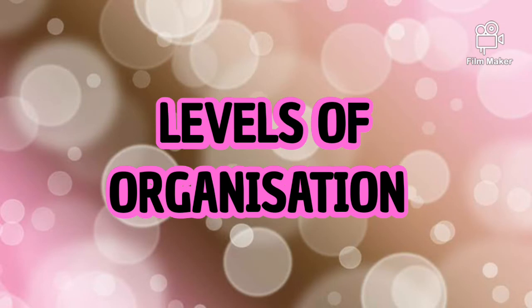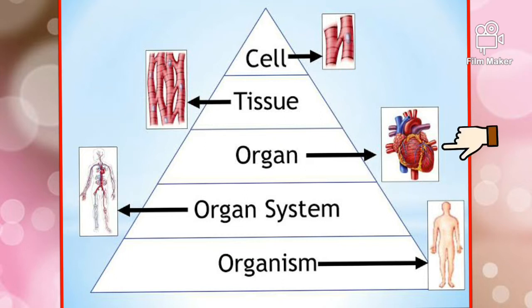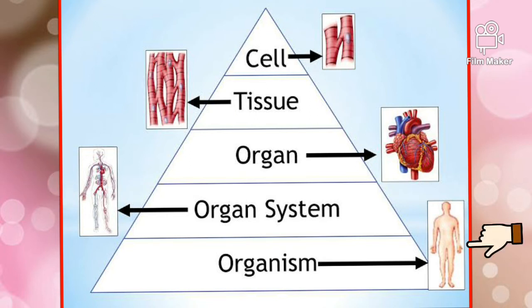Let us quickly revise the levels of organization in our body. The smallest unit in our body is the cell. A group of cells makes up tissues. A group of tissues makes up an organ. A group of organs makes up an organ system. And a group of organ systems makes up an organism.